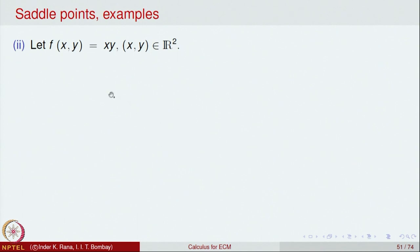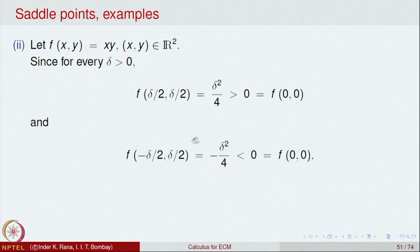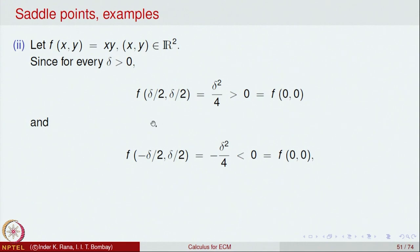Let us look at the function f(x,y) = xy, whose domain is all of R². For every δ, the value of the function at the point (δ/2, δ/2) equals δ²/4, which is bigger than 0. At the same time, the value of the function at (−δ/2, δ/2) is −δ²/4, which is less than 0. So by choosing δ sufficiently close to 0, we can find points in the domain close to the origin where the values are positive and another point where the value is negative. Thus (0,0) is also a saddle point for f(x,y) = xy.